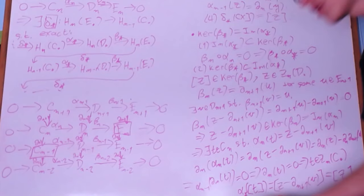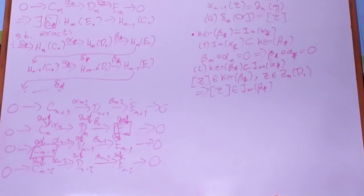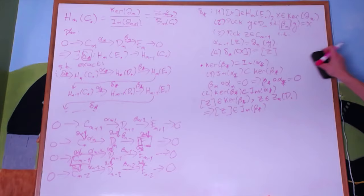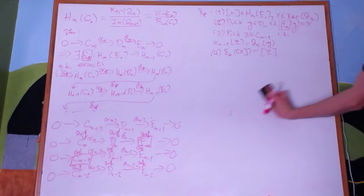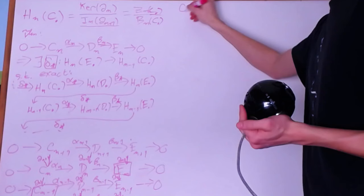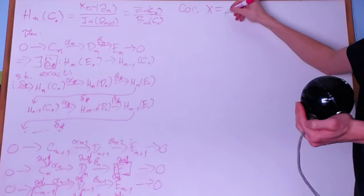That completes the proof that kernel(β*) ⊆ image(α*). I'm going to leave the rest of the exactness proofs up to you, because that one by itself took a really long time. Now that we have that the sequence is exact, that δ* is a homomorphism, and that it's well-defined, let me go ahead and actually show you the Mayer-Vietoris sequence — it's a corollary of this.